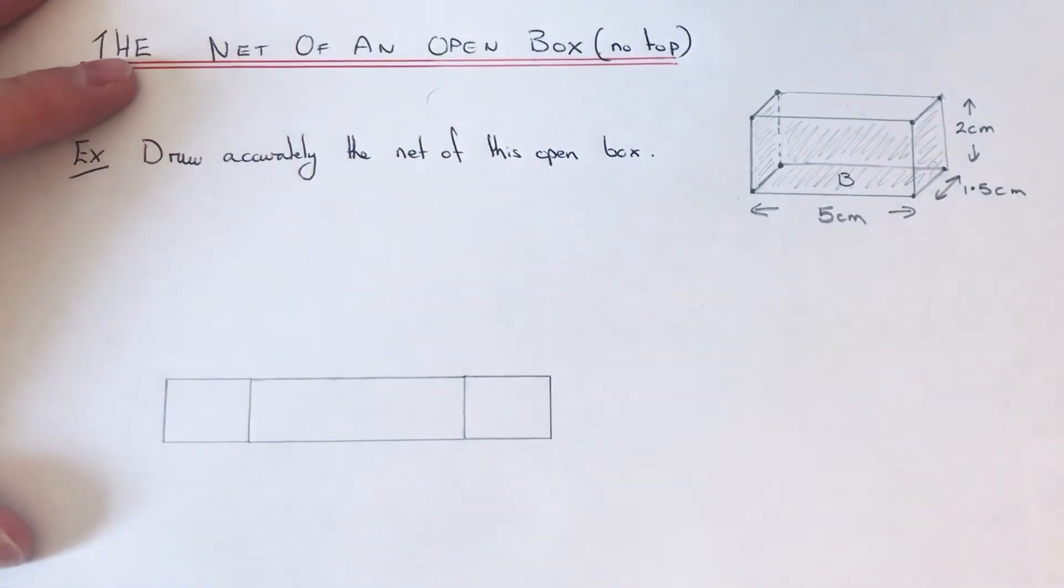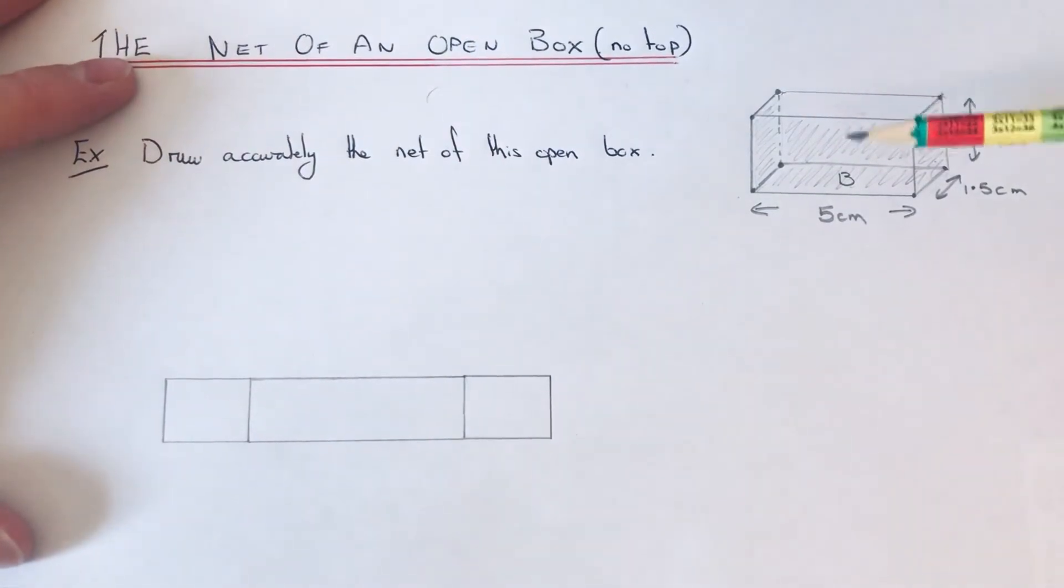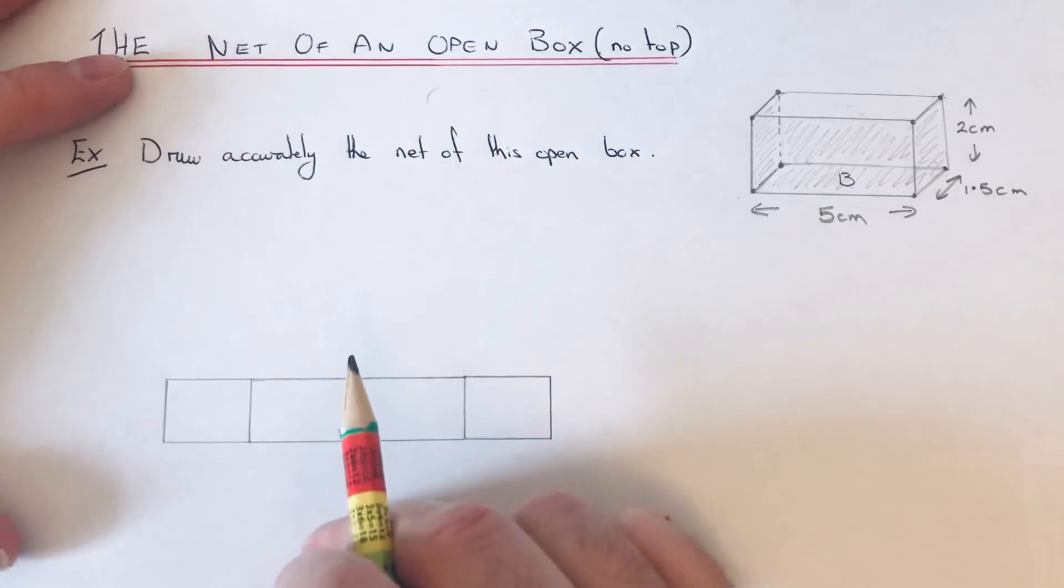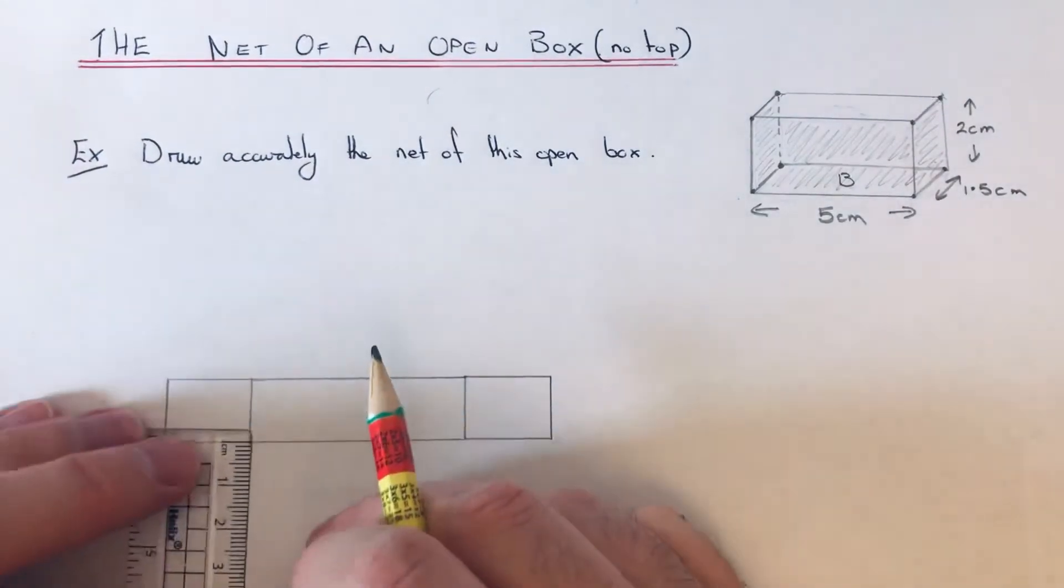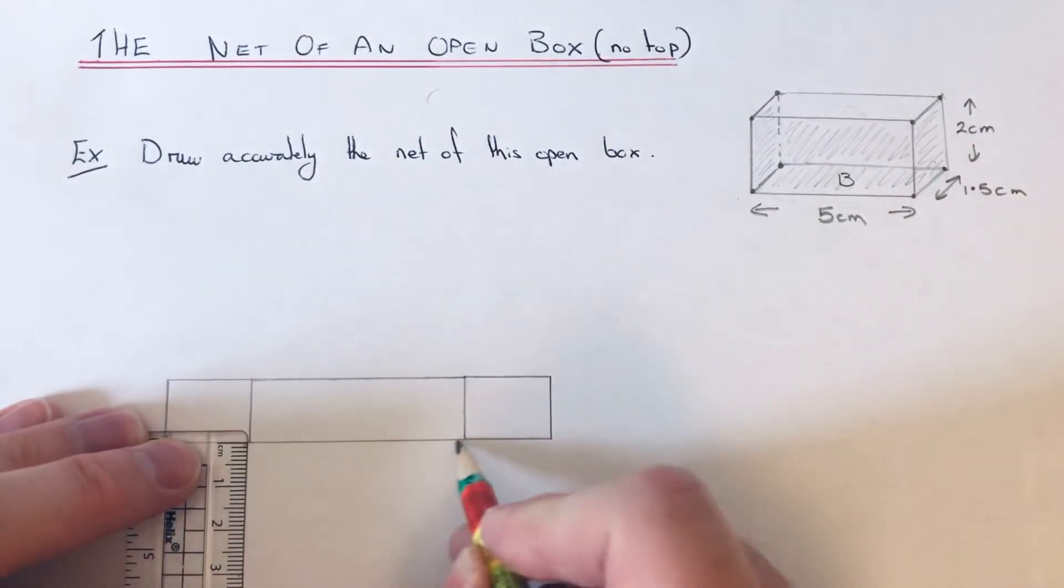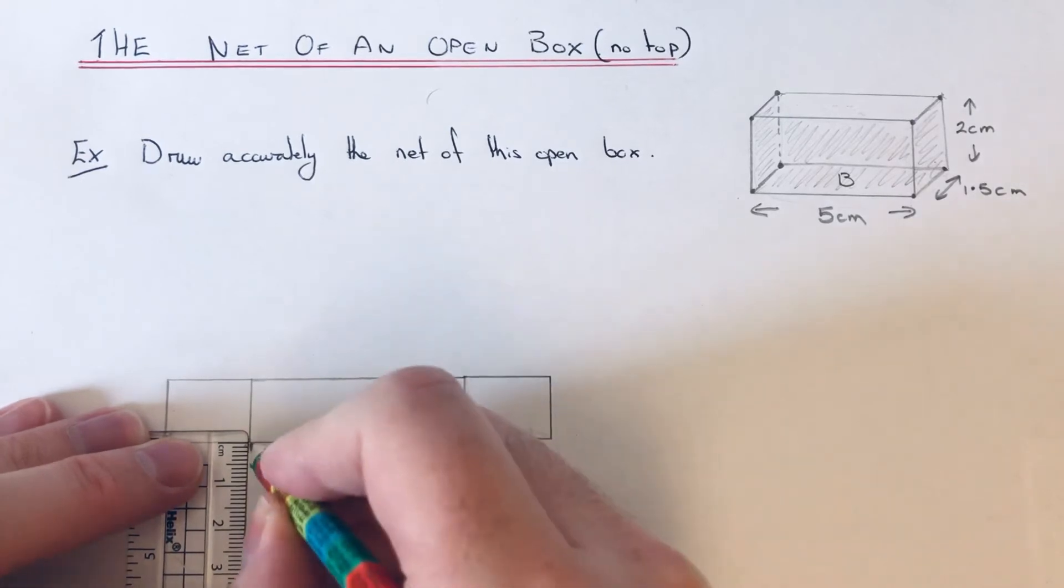Then we just need to do the front face and the back face. The front face is a 5 by 2 cm rectangle, so we can put that one underneath. We've already got the 5 centimeters there, so we just need to go out 2 cm.